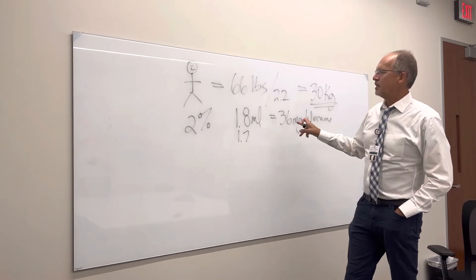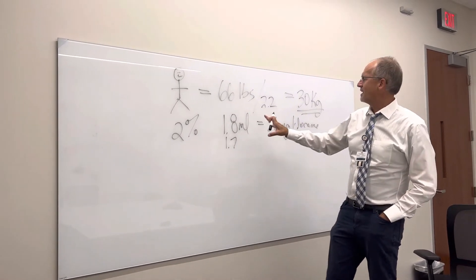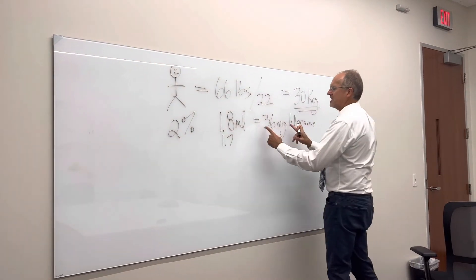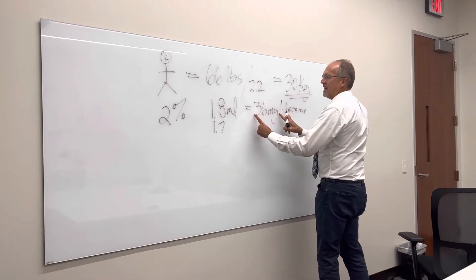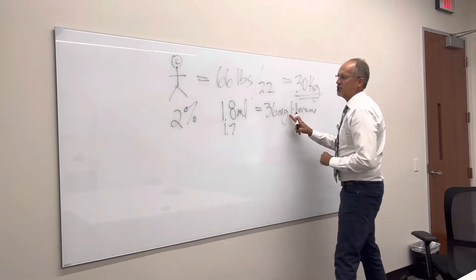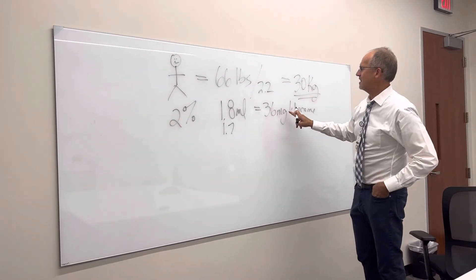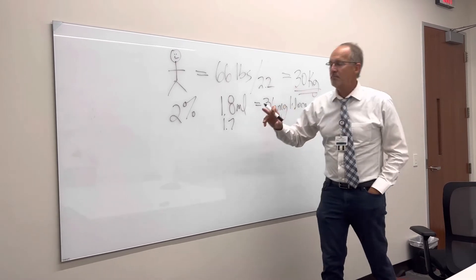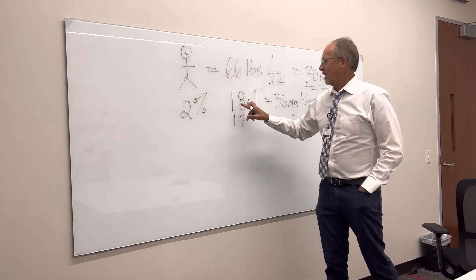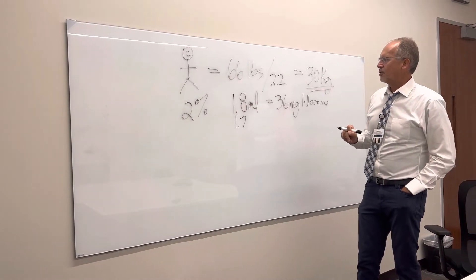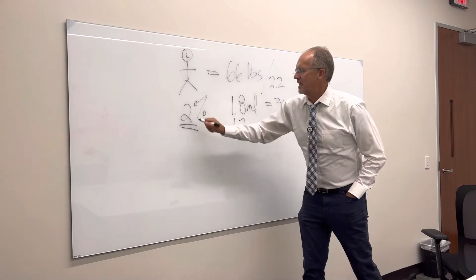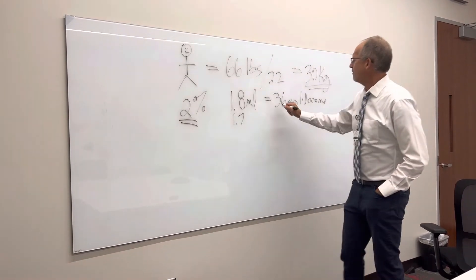There are 10 milligrams per milliliter. If you just remember that there are 36 milligrams of lidocaine in a 2% cartridge, that's all you really need to know. But if you're interested in how we get to 36: there are 10 milligrams per milliliter in a 1% solution, so in a 1.8 milliliter carpule there are 18 milligrams. But we have 2%, so we double that, giving us 36 milligrams.